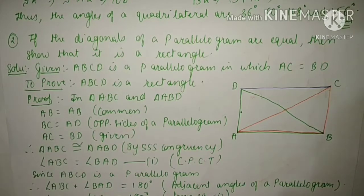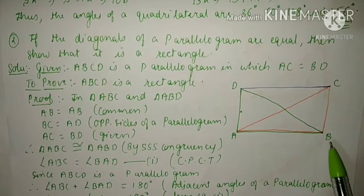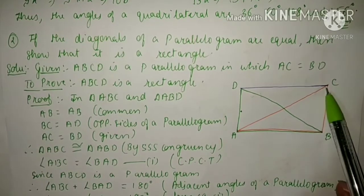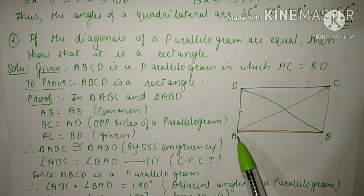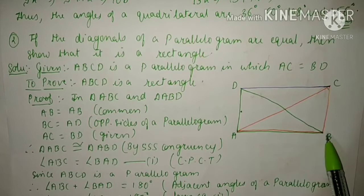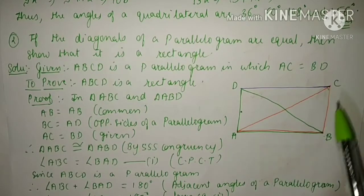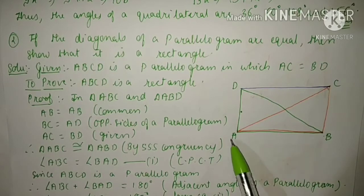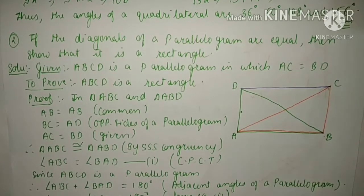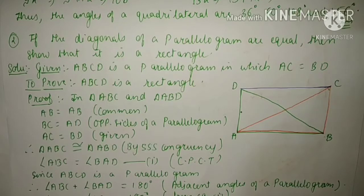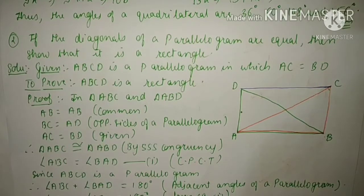First we will take triangle ABC and triangle ABD. Triangle ABC is drawn with orange color and triangle ABD is drawn with green color. Now we have to prove these two triangles congruent.